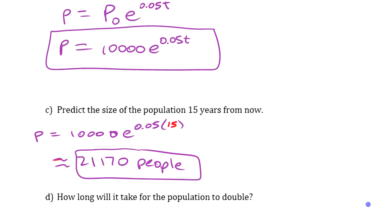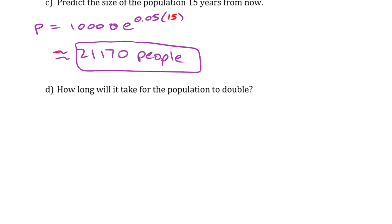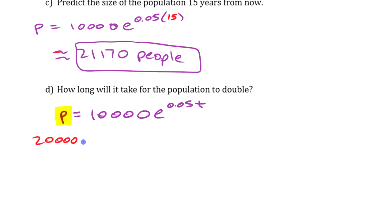If you want to know how long it takes the population to double, starting with our solution equation — 10,000 e^(0.05t) — we can just put in double the population. You could put 20,000, since we're starting at 10,000, and just keep the rest the same and solve it.